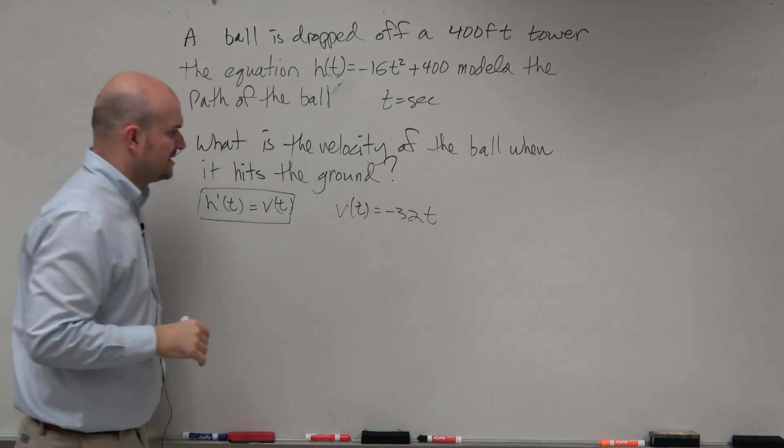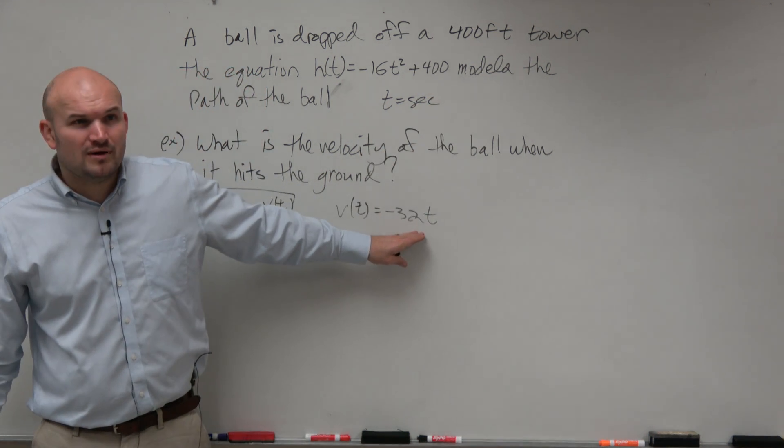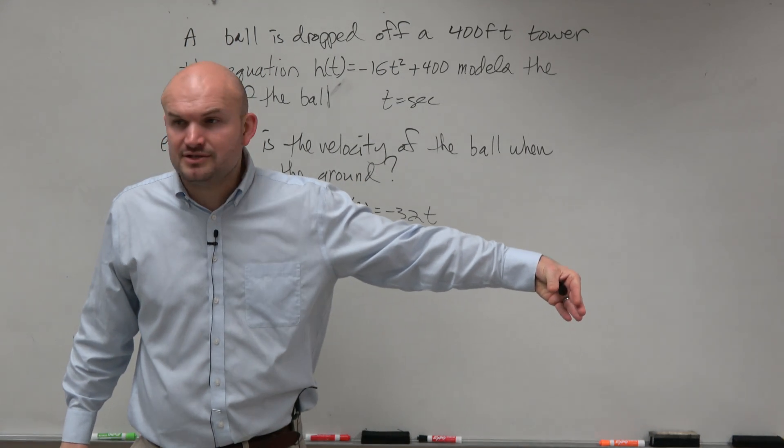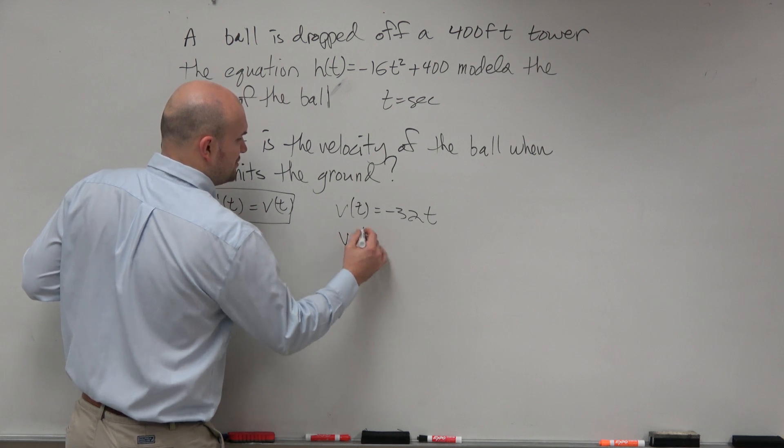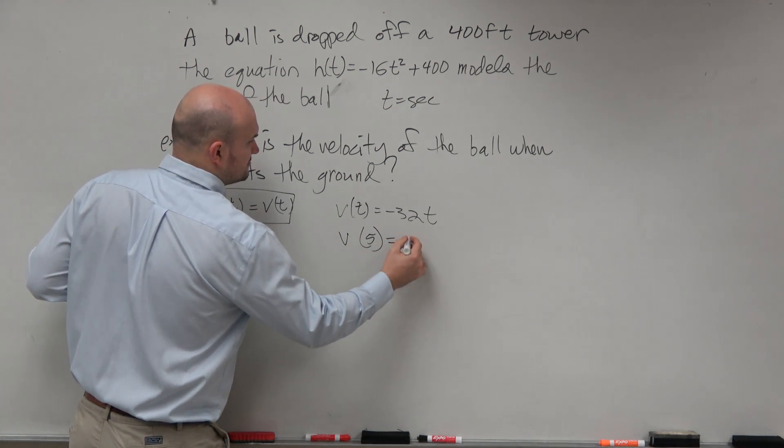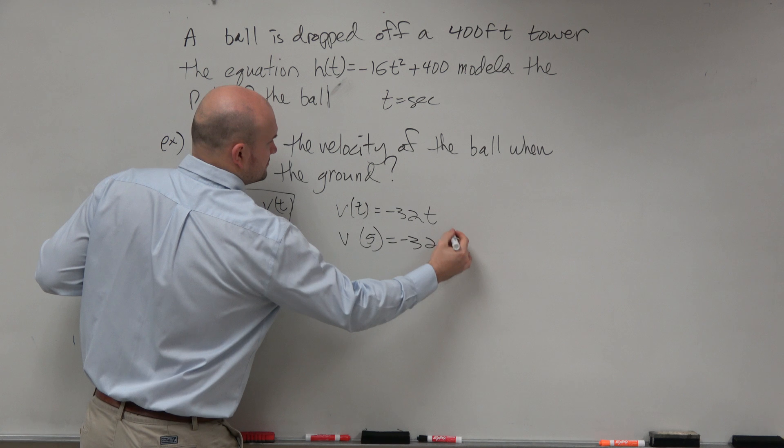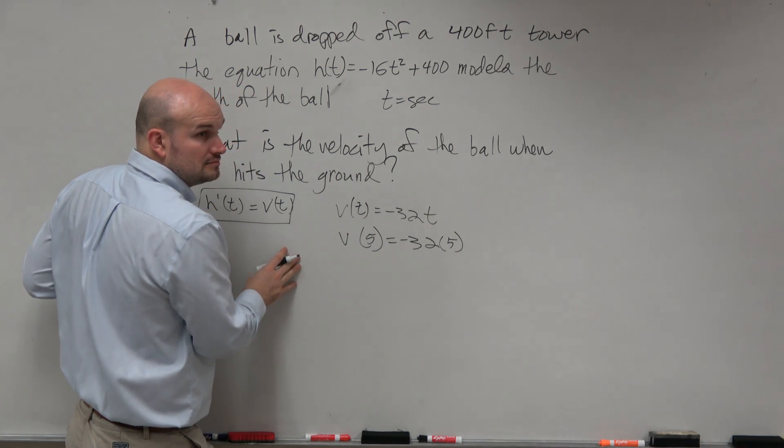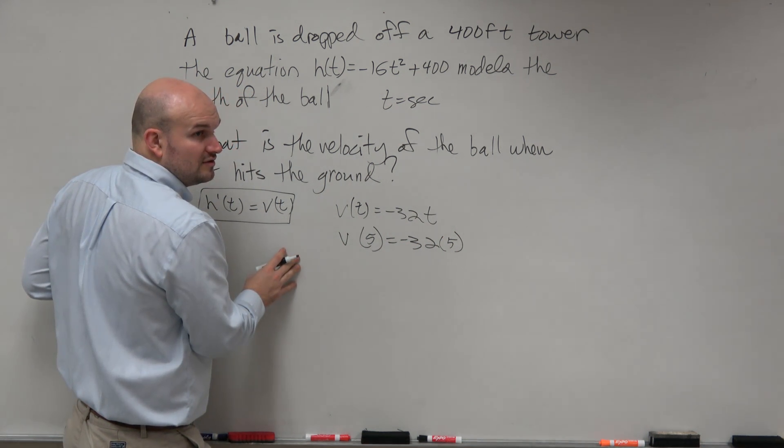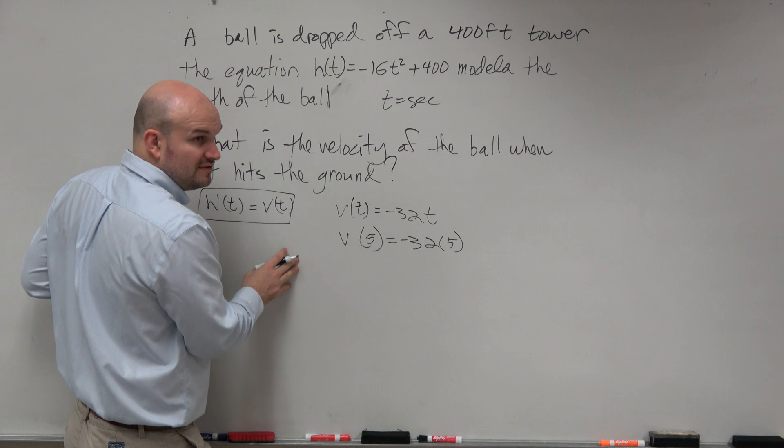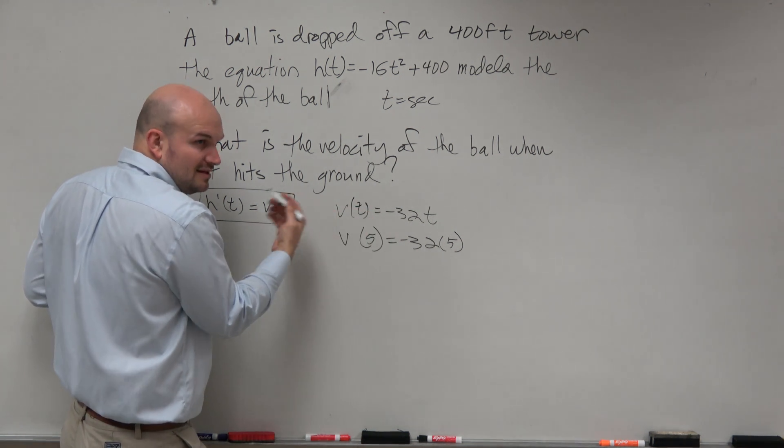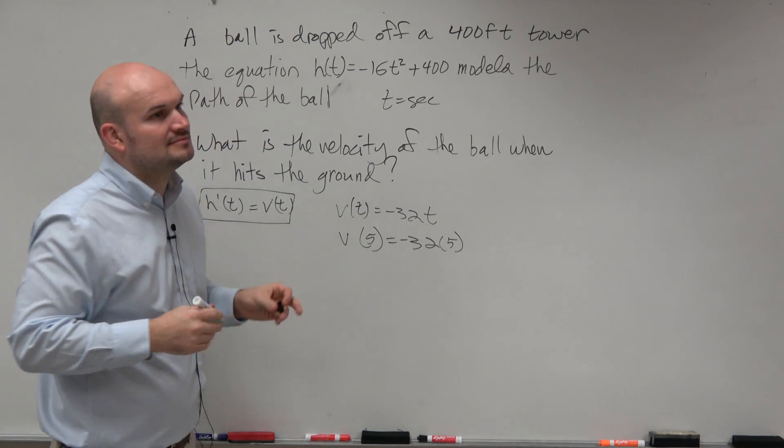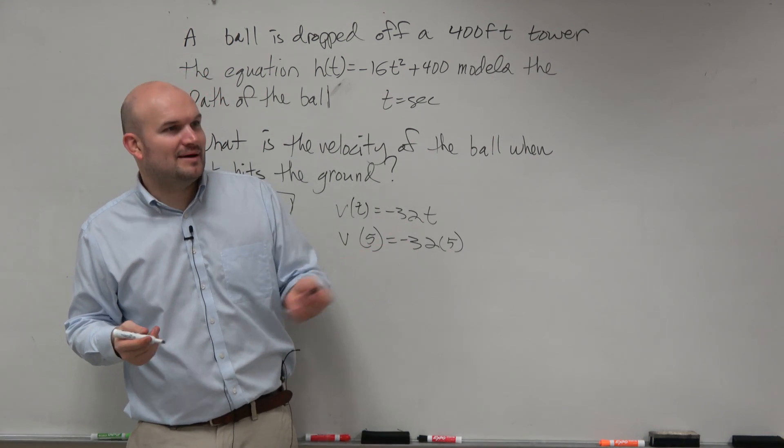I forgot—t is equal to seconds. And then how long does it take for it to meet the ground, which we learned in the last problem, which took five seconds. So therefore, I'm just going to do v(5). I'm just saying v(5) rather than f of v of 5.